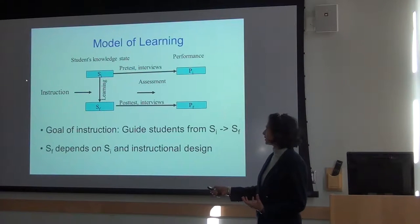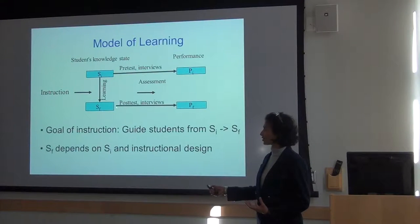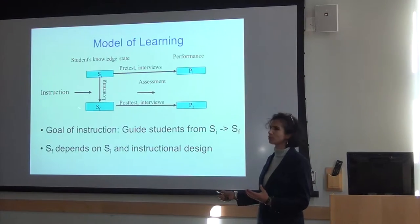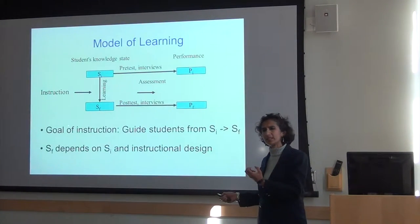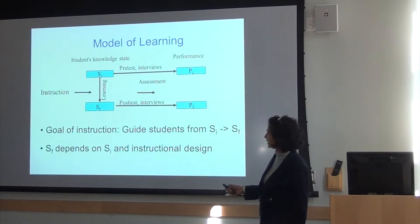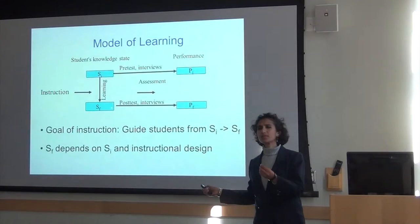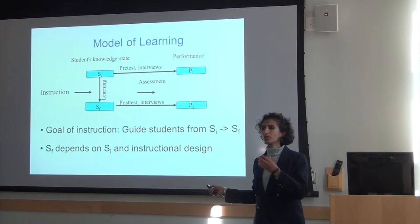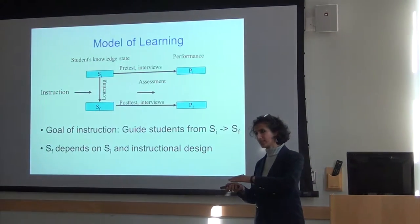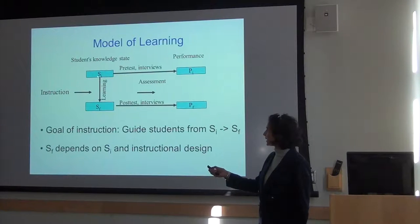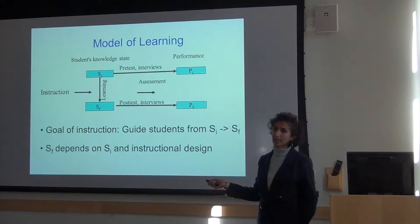When we teach students, the goal of instruction is to get students to learn something and take them to some final knowledge state. You should think about this carefully: what do we want students to be able to do at the end? How would we know that students have learned those things? It's very important to not only know what your goals are and what final knowledge state you want students to get to, but also where are the students at the beginning of the course.